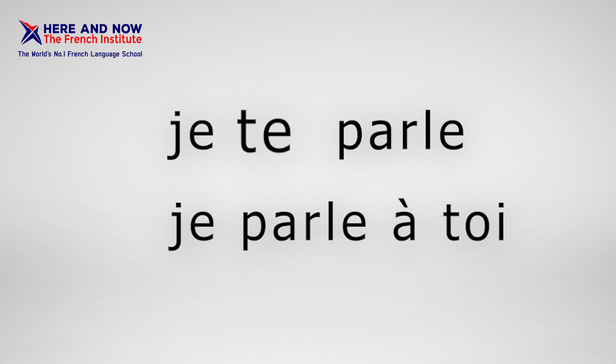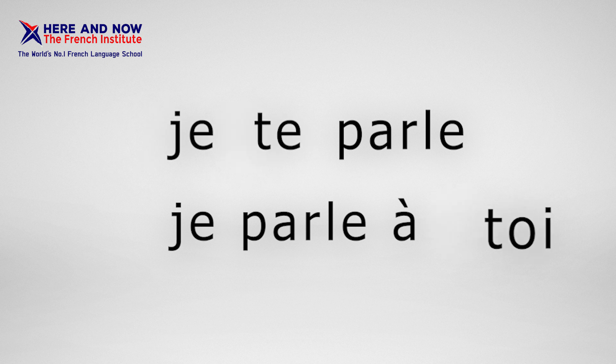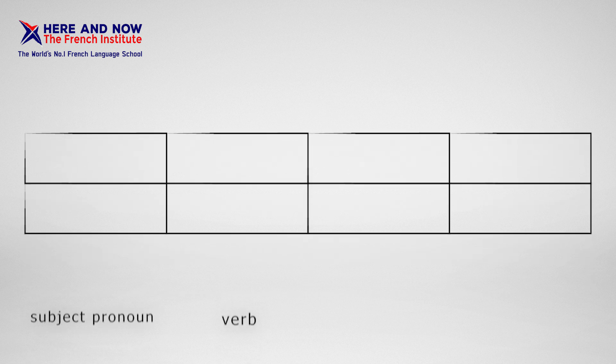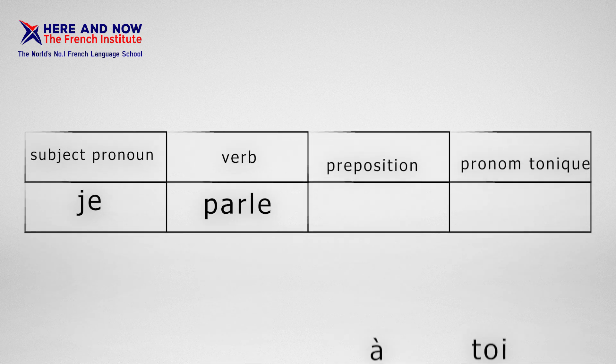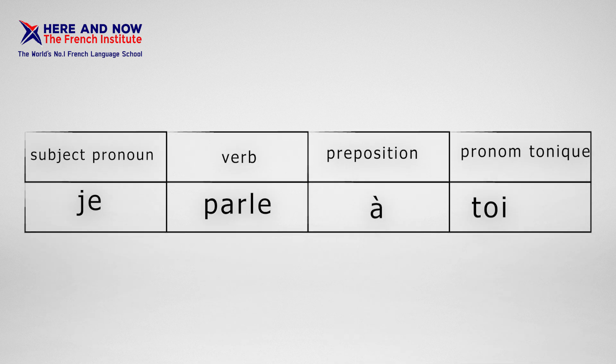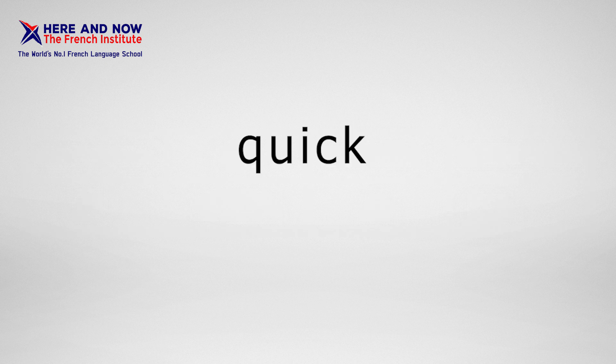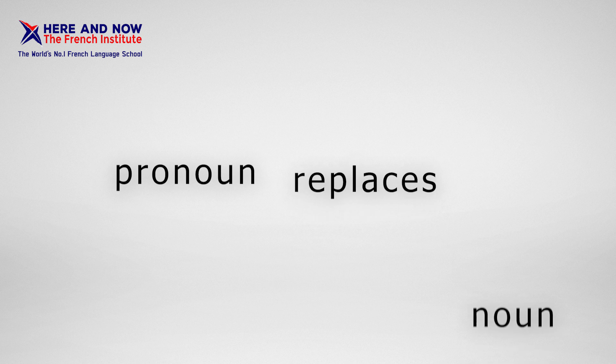'Je' is a pronoun, 'te' is a pronoun, and 'toi' is also a pronoun. Every pronoun has its place and should be placed in the right order. Let's have a quick recap on what a pronoun is — a pronoun replaces a noun. Instead of saying 'c'est Pierre'...